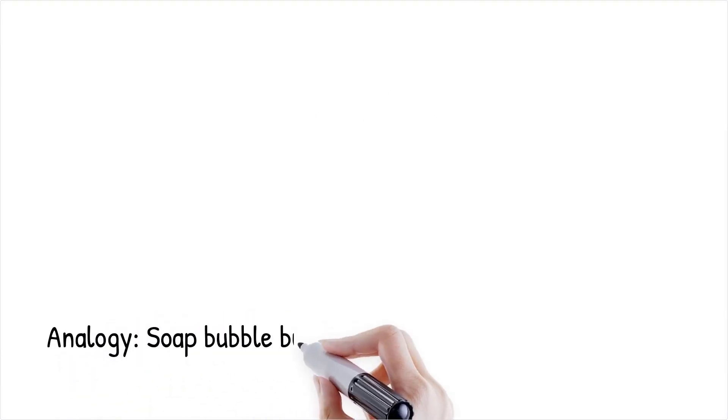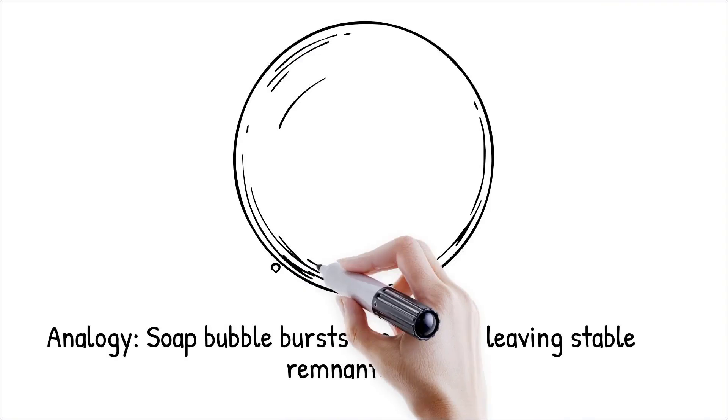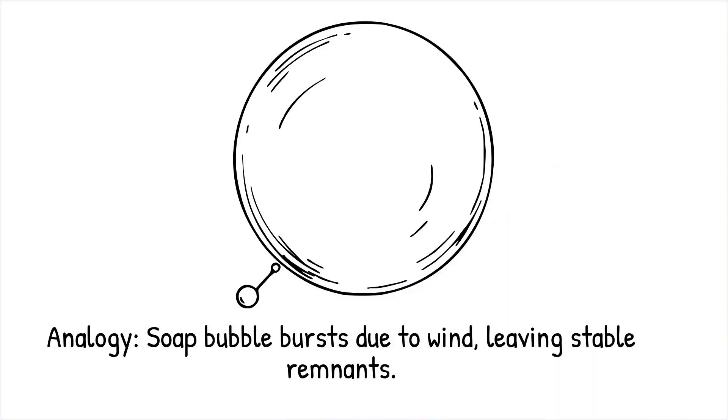Analogy: Think of a soap bubble floating in still air. It's delicate and intact. If a gust of wind blows, the bubble bursts, leaving behind only its remnants—pointer states—as stable classical behavior.